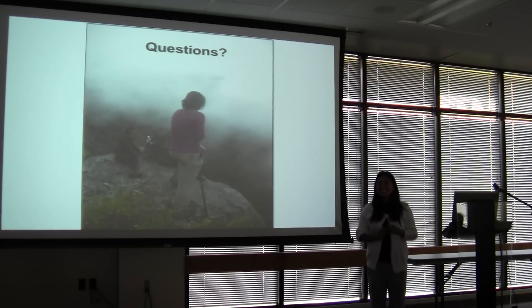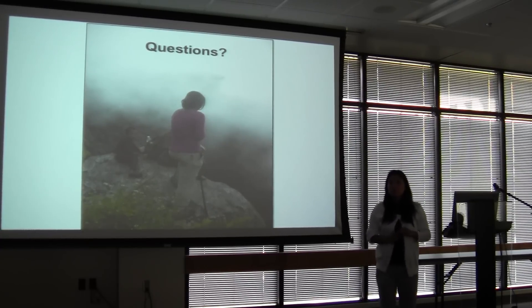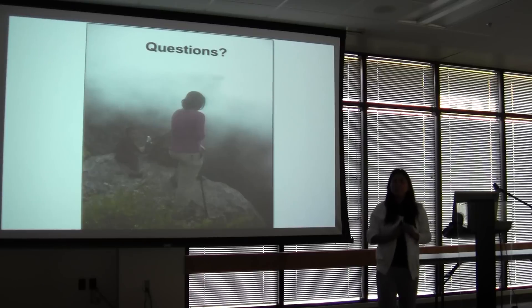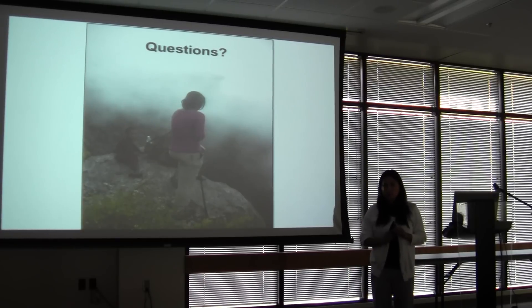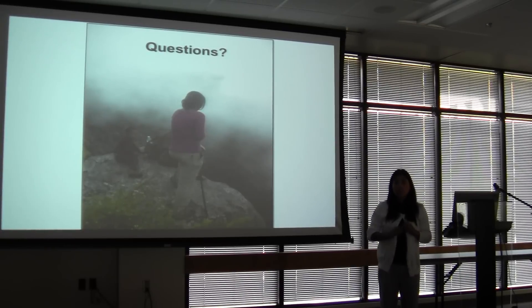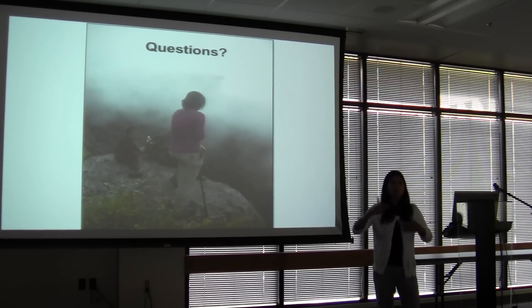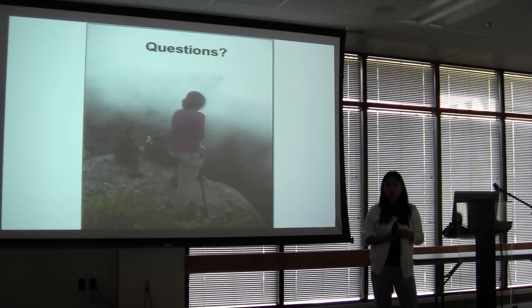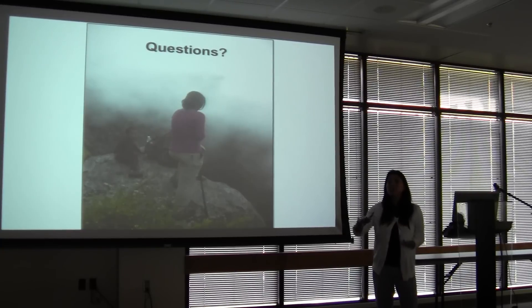A question was raised about whether the species important to people involve active management. The speaker noted that people do not involve themselves in planting these species. They were asked: if you have to travel two to three hours on average to get fuelwood and other resources, why don't you plant? They said they don't really plant. Almost everything recorded in the plots was used for at least one purpose, and that purpose was mostly fuelwood.